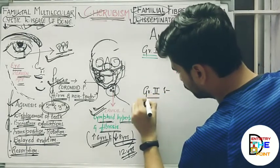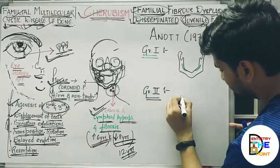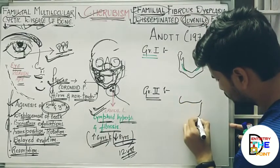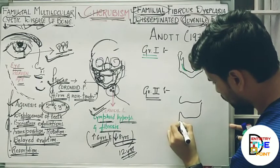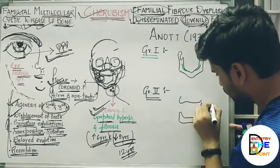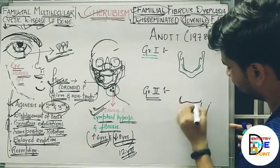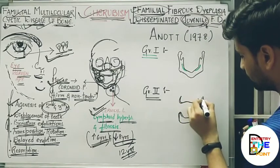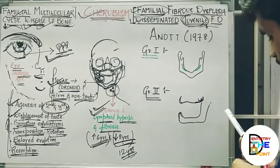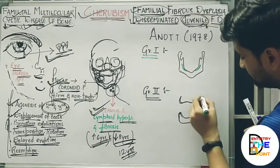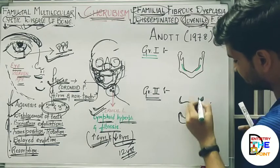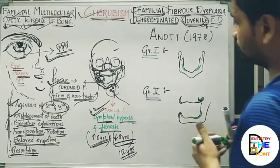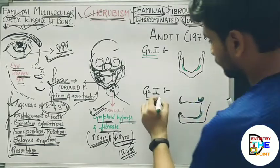For Grade 2, looking at a side view with the maxilla and mandible visible: both the right and left maxillary tuberosities along with the ascending rami are involved. This constitutes Grade 2.